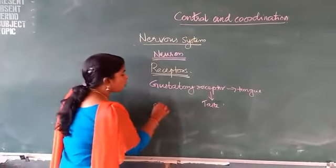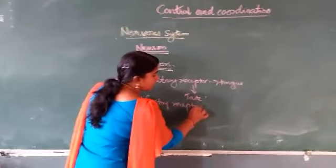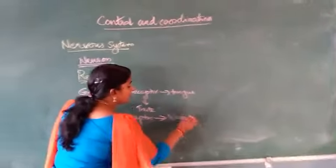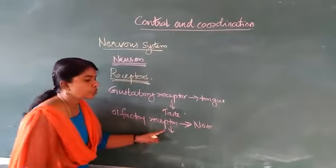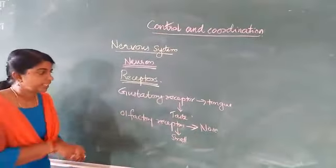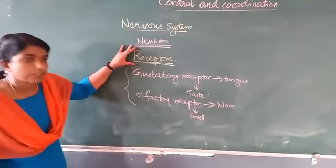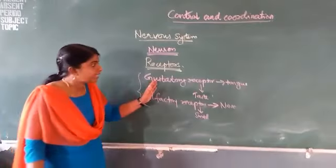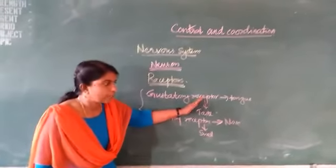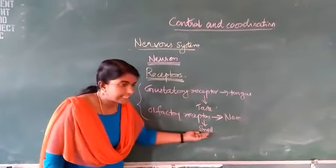Another example is olfactory receptors. These receptors are located in our nose, so their function is to help us detect smell. These are some of the examples — it is very important for your exam also. So, receptors are specialized nerve cells located mainly in the sense organs. Gustatory receptors in the tongue detect taste; olfactory receptors in the nose detect smell.